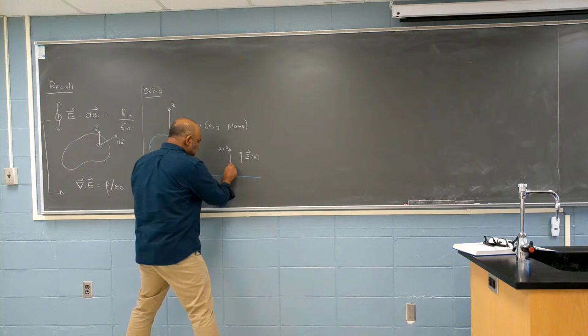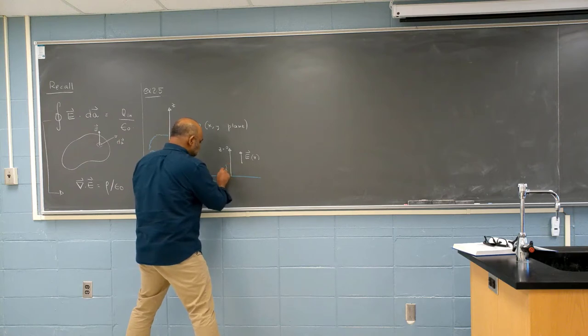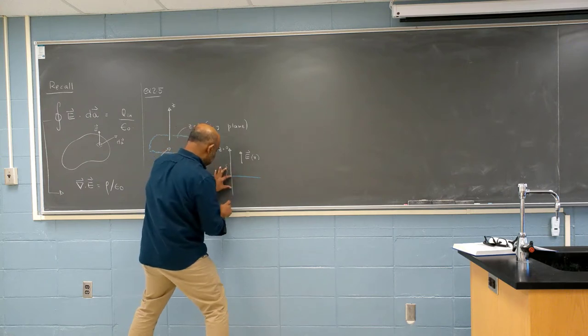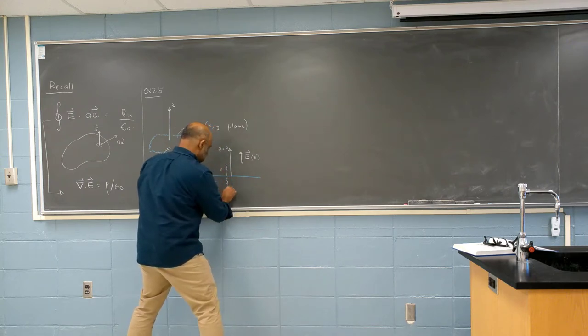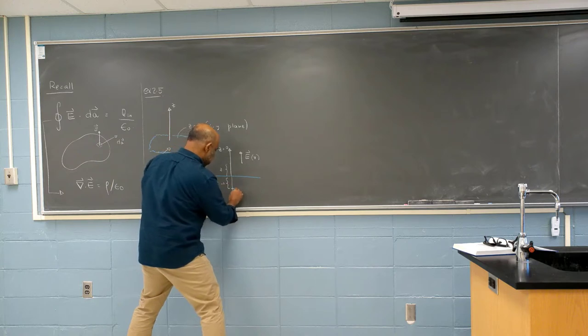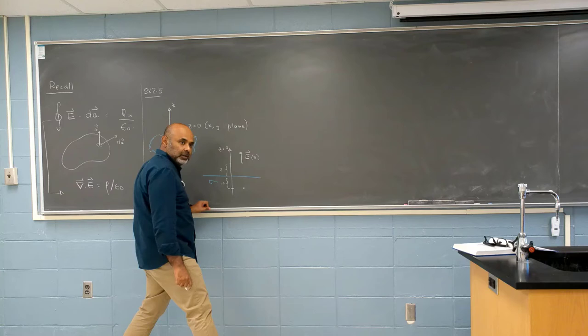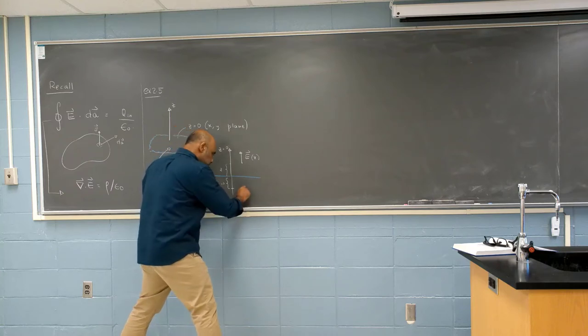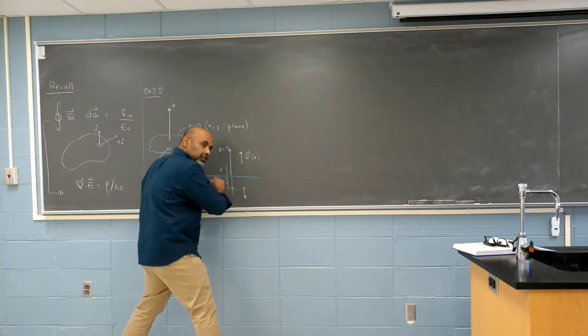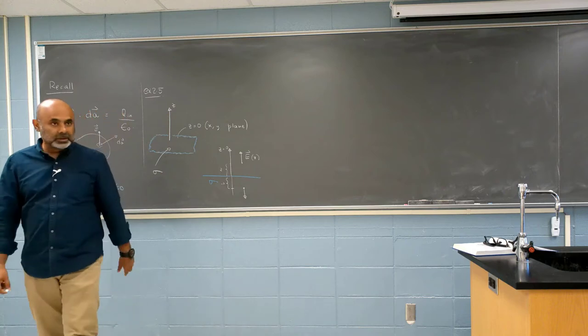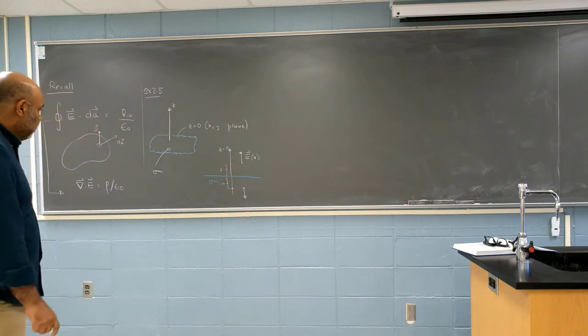Now, if I go the same distance, this is z. If I go the same distance over here, this is minus z. Which way do I expect the electric field to point? Downward. Would it be the same magnitude? Yeah.